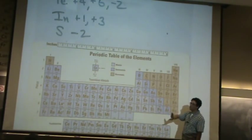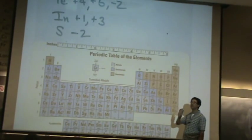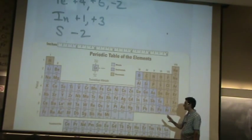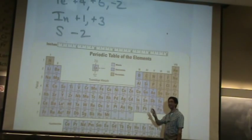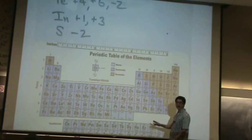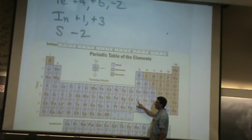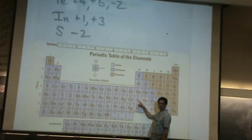The smaller of the positive numbers comes from what's called the inert pair. So, the smaller positive number is actually the inert pair. It's two less than the larger number, always. So, if indium just loses this electron, plus one.